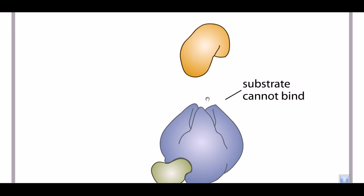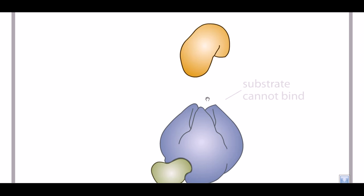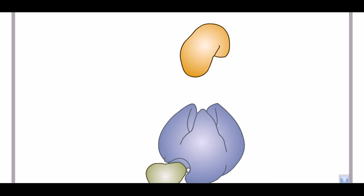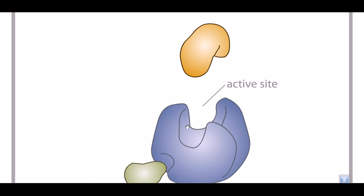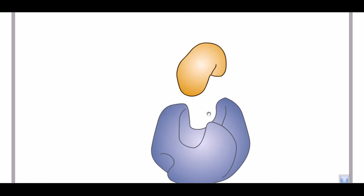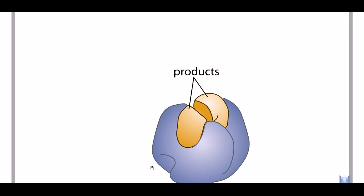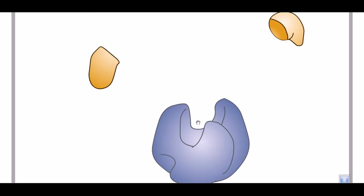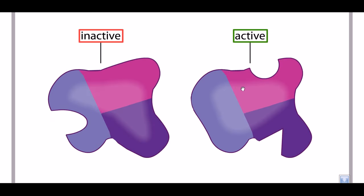This is the substrate that the enzyme needs to convert. When the inhibitor binds to the enzyme, it blocks the active site, so there is no conversion of substrate into product. But when there is no inhibitor present, the substrate can easily bind to the active site and products can be made.